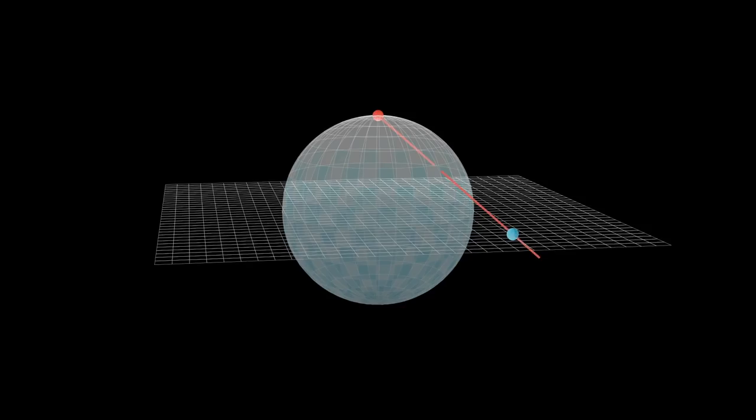You can also do this in reverse. Start with a point in the plane, draw a line to the north pole, and where that line cuts the sphere is the inverse stereographic projection of that point.